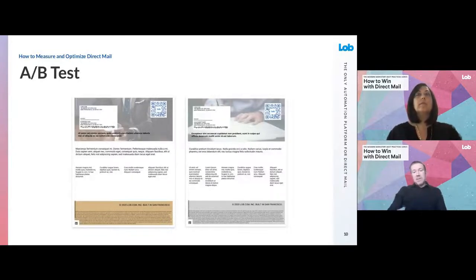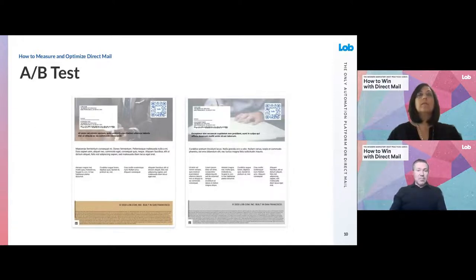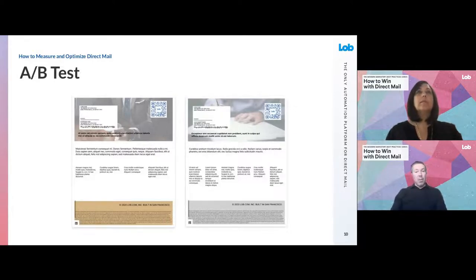They were able to identify the contenders that outperformed all others and continue to optimize. If you're mapping this back to your marketing automation platform, using things like a holdout group — something as simple as sending one population email and another population email plus direct mail to see which gets better lift — all of this can be stood up in less than a week when working with Lob, because these marketing automation platforms are also very easy to integrate out of the box.